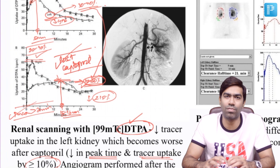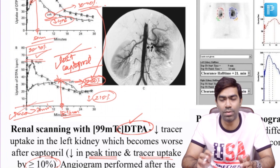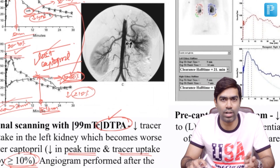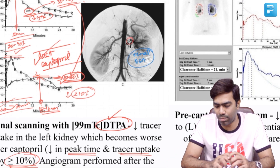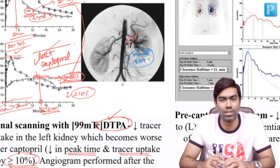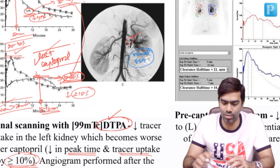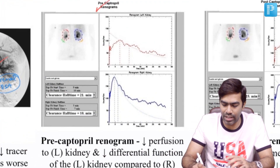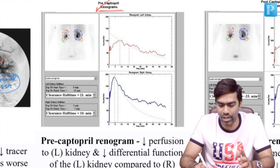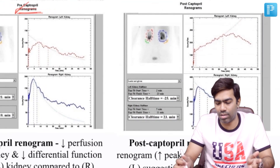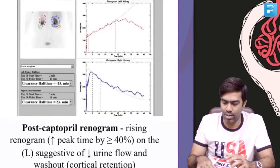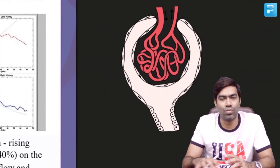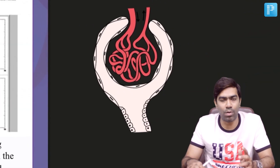Since this is non-invasive imaging, any positive or equivocal finding should be followed up with invasive imaging such as renal DSA. In this patient, renal DSA clearly shows a stenotic lesion in the proximal part of the left renal artery, very suggestive of atherosclerotic renal artery stenosis. Coming to MAG3 tracer: the same protocol is used — pre-captopril images are obtained, then post-captopril renograms are obtained about one hour after giving captopril. MAG3 is useful as a marker of renal blood flow.